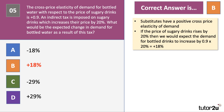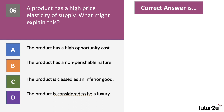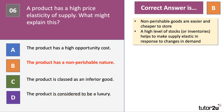Our last question is about price elasticity of supply. A product is found to have a high price elasticity of supply — which of the options might explain this? Elasticity of supply is about firms' ability to change the quantity supplied when demand changes. The correct answer is B: the product is non-perishable. Non-perishable goods are easier and cheaper to store, and high levels of stocks — or inventories — make supply more elastic in response to changes in demand.